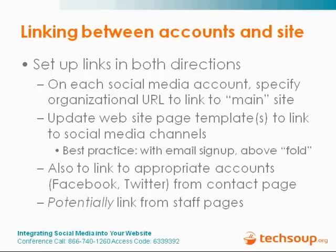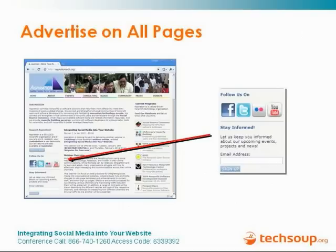Let's take a look at some examples of the way that Aspiration does this. We already had an email signup area on our website. What we simply did was add a 'Follow Us' block above that, where we link to our Facebook, Twitter, Flickr, and YouTube accounts — with the idea being we will meet you wherever you want us to meet you. People can click on those and follow us on Facebook, follow us on Twitter, and become aware of those channels we are publishing on instead of just coming to our website.